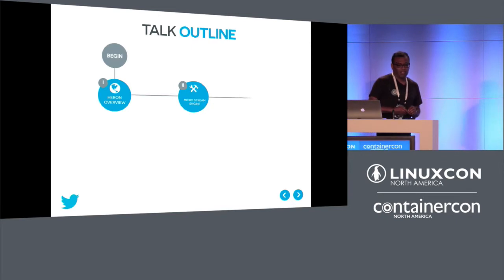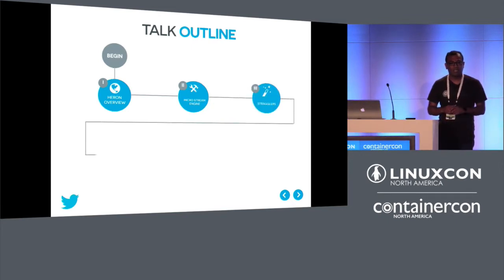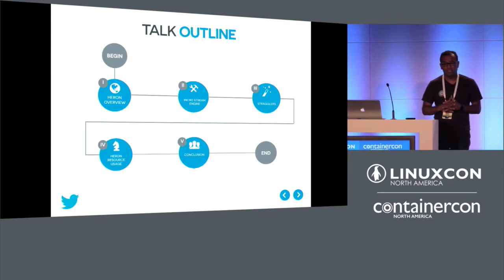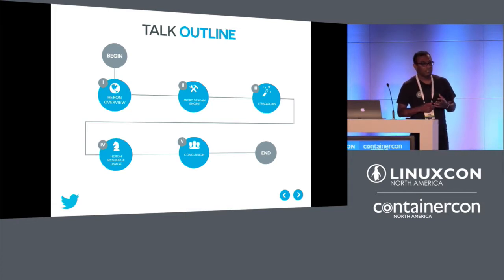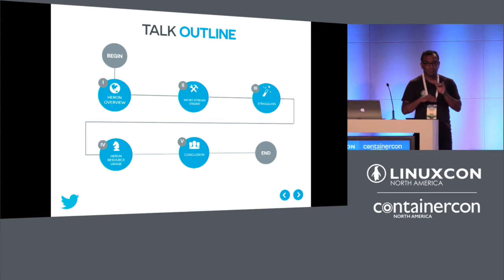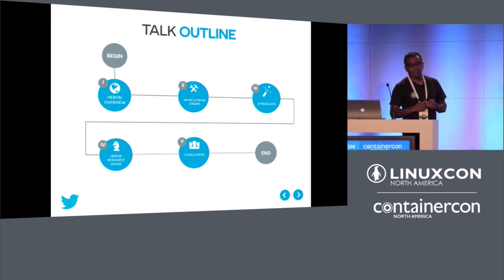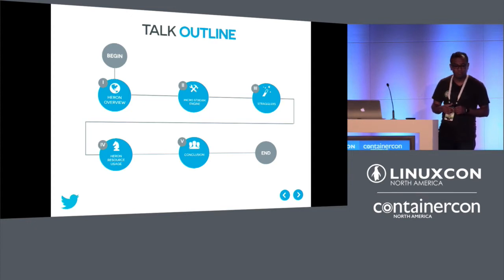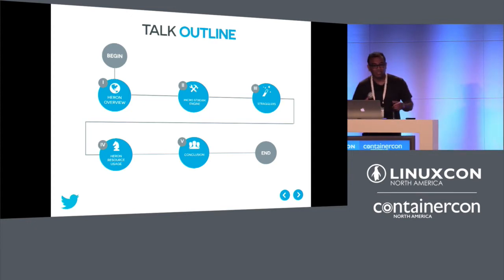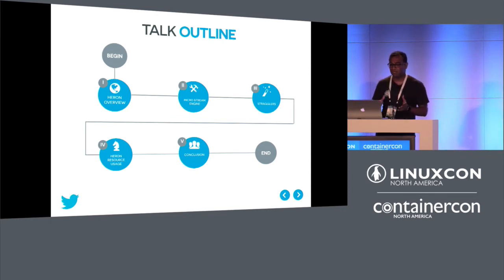The talk outline is as follows: First, I'll give a Heron overview and introduce the concept of micro streaming in the context of Heron — how Heron differs from a lot of streaming engines out there in open source. I'll highlight a couple of problems we faced in production, including stragglers and how to deal with slow machines. I'll also give performance numbers, and finally, ideas about contributions, followed by conclusions.